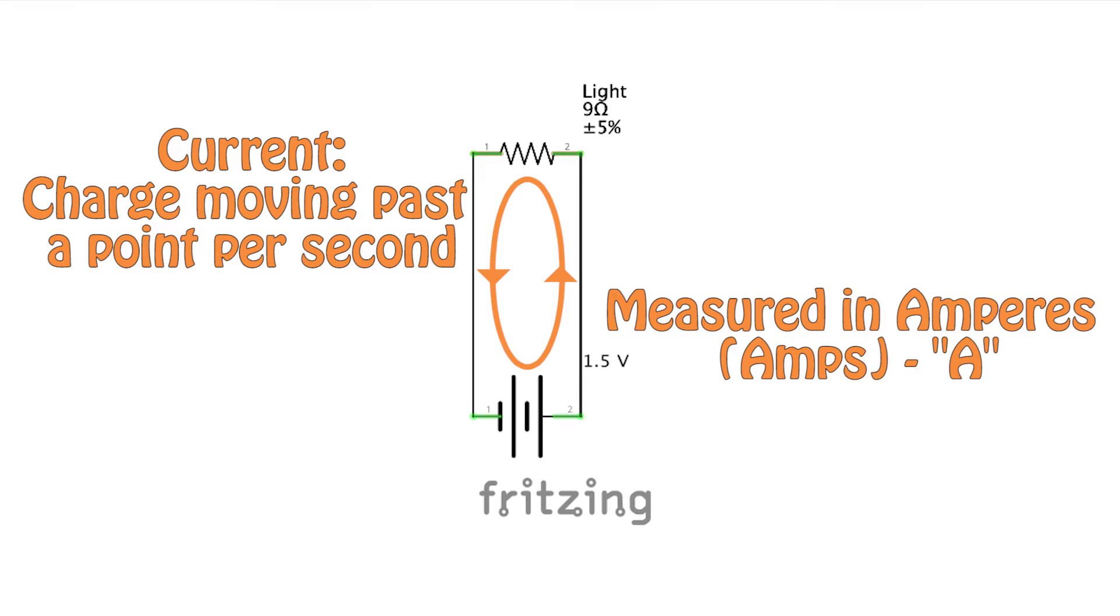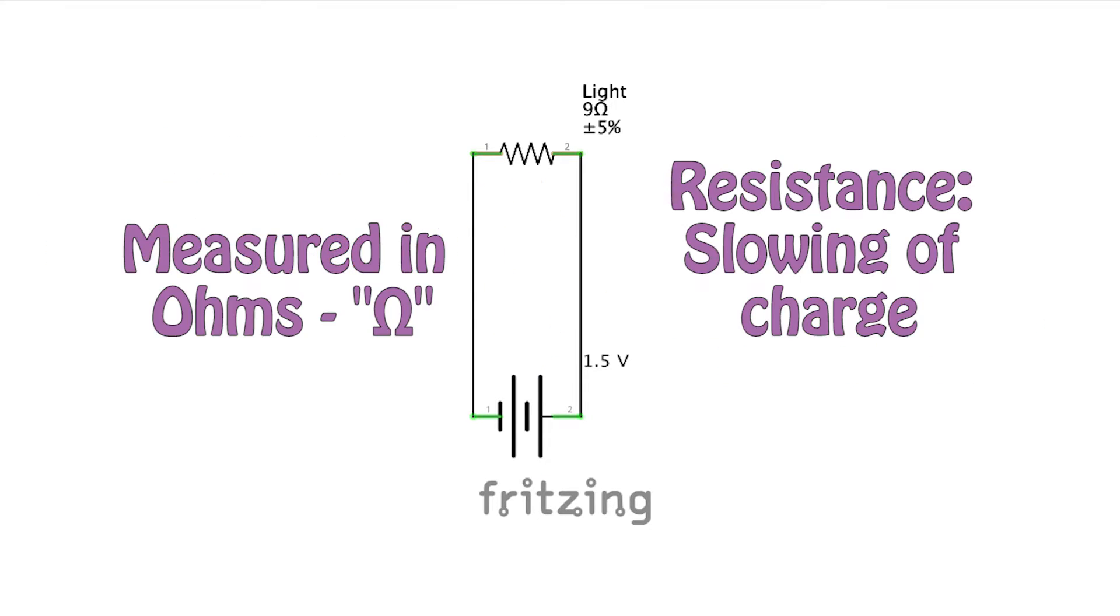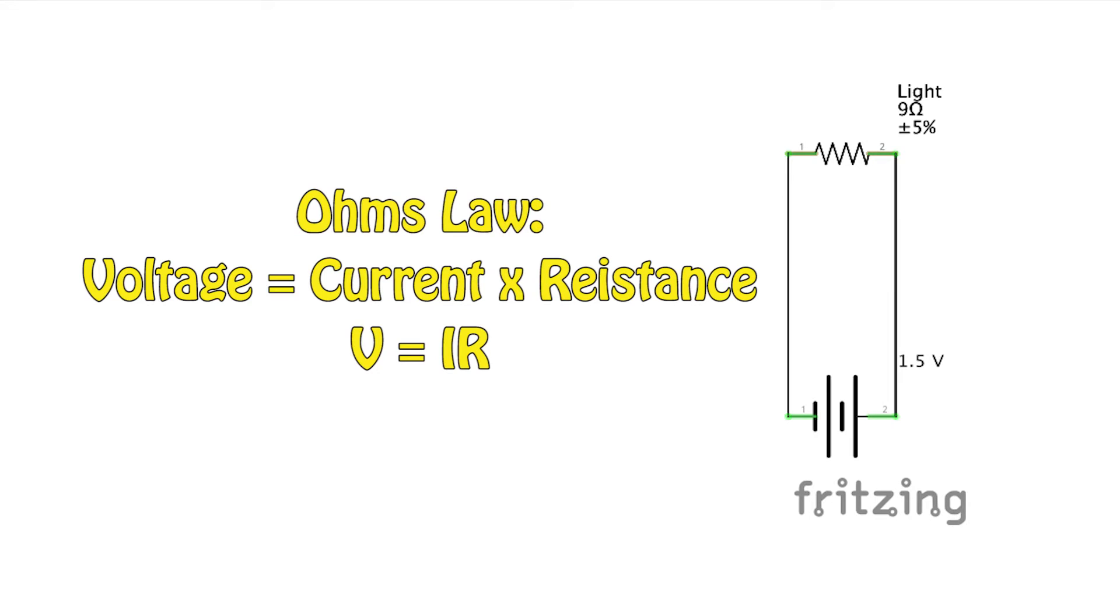Current is how much charge is able to move past a point per second and is measured in amperes or amps for short. And resistance is what slows down the flow of charges and is measured in ohms. Ohm's law shows us how voltage, current, and resistance relate to each other.